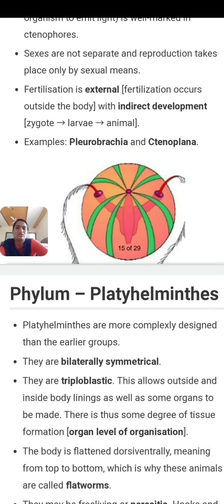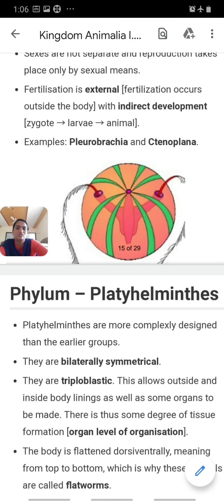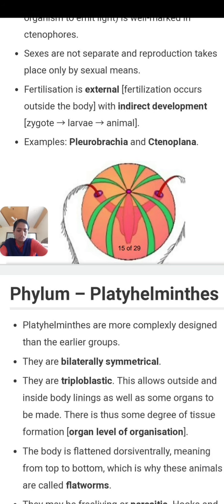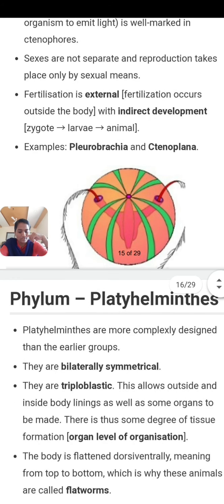Examples of Ctenophora are Pleurobrachia and Ctenoplana. The diagram shown belongs to Pleurobrachia. Additionally, cnidoblasts are absent in Ctenophora; instead, specialized cells called colloblasts — sticky cells — are present to capture prey.